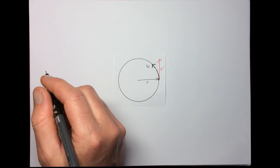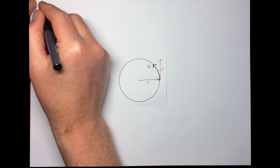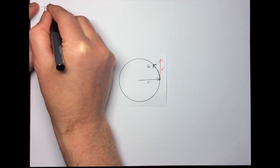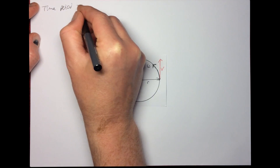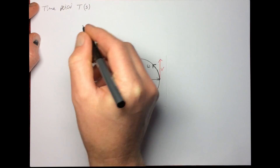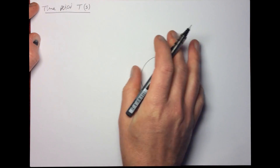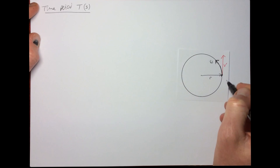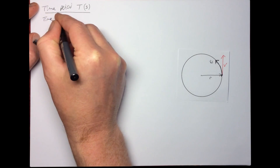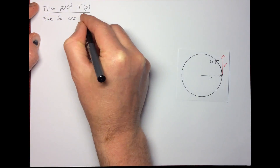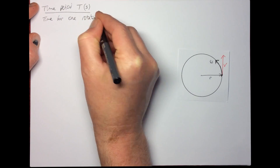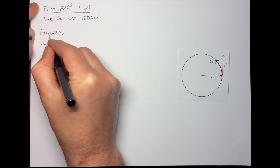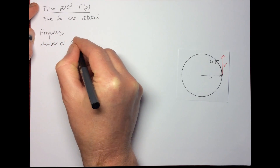There are a couple of things we need to define. First, the time period, given the symbol capital T and measured in seconds - this is the time it takes the object to go around the circle once, the time for one rotation. Then you have the frequency f, which is the number of rotations per second.